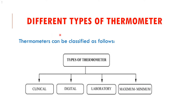Now, different types of thermometers — we need an instrument to measure temperature, and that instrument is the thermometer. Thermometers are of four types: clinical thermometer, digital thermometer, laboratory thermometer, and maximum and minimum thermometer. We will learn about all four types one by one.